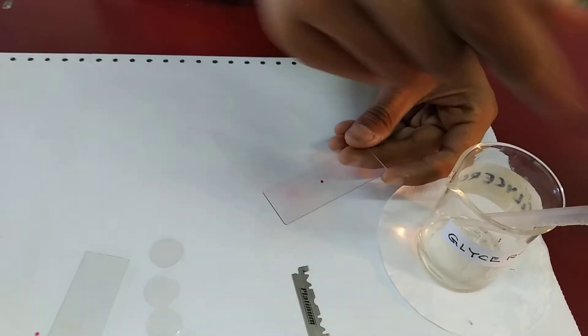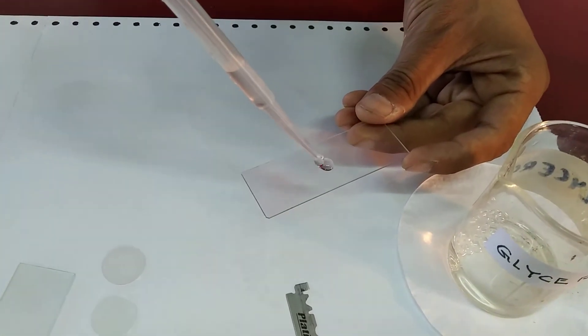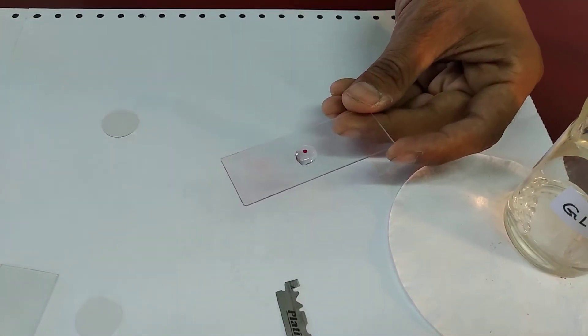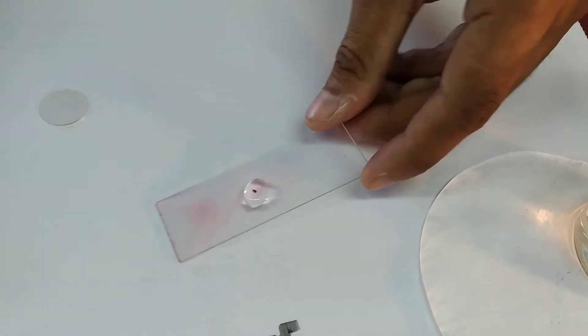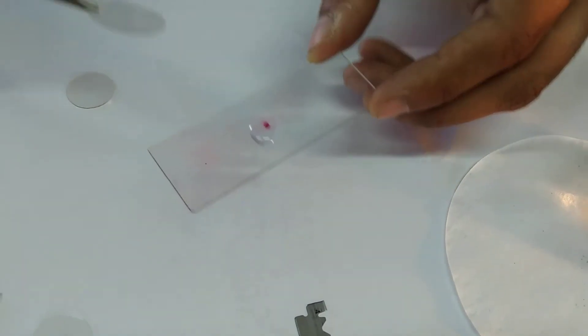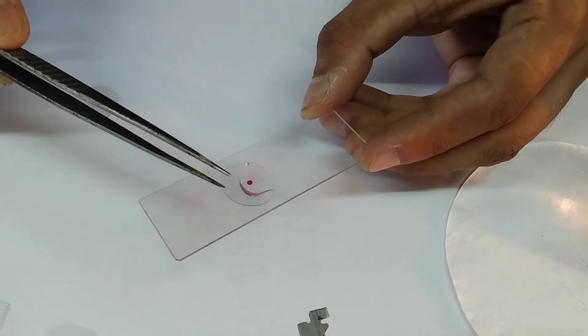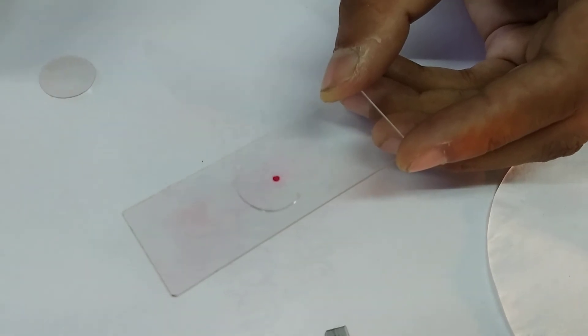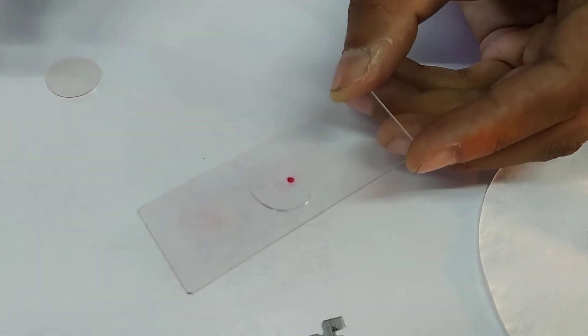Now the most important part of the experiment. Add a drop of glycerin on the section and slowly cover it with a cover slip. When placing the cover slip, be very careful so no air bubbles enter. You don't need to press or anything. Just let the cover slip rest on the section. You can see there are no air bubbles.